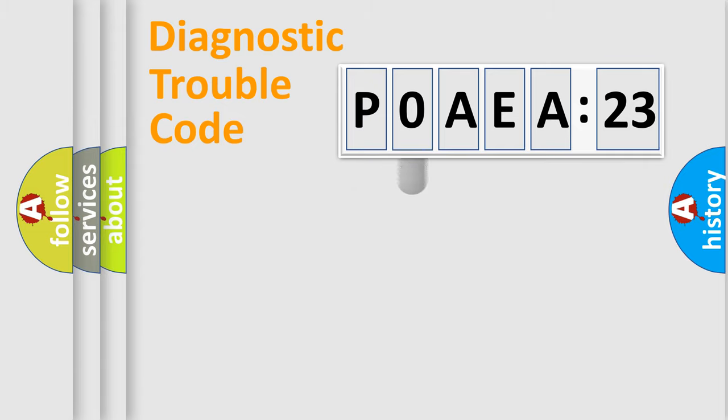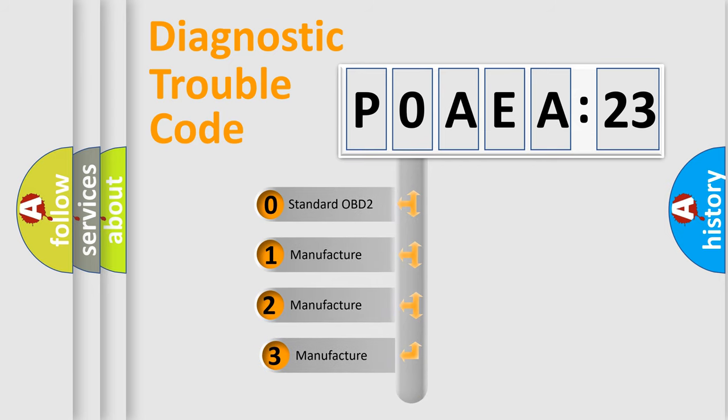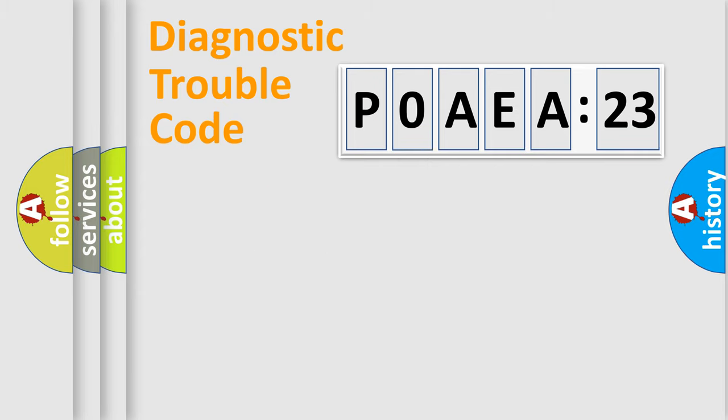The third character specifies a subset of errors. The distribution shown is valid only for the standardized DTC code. Only the last two characters define the specific fault of the group.